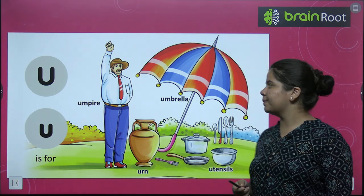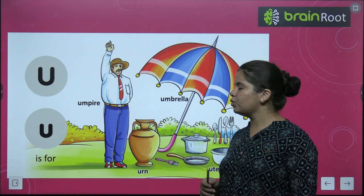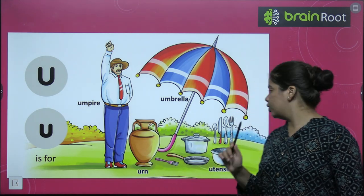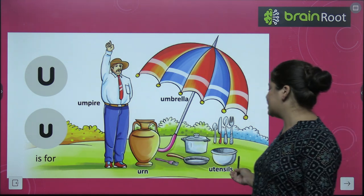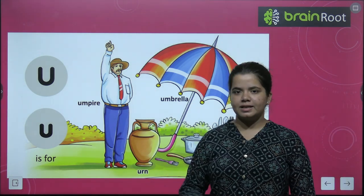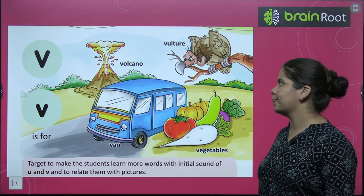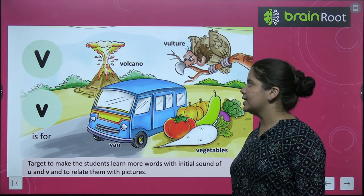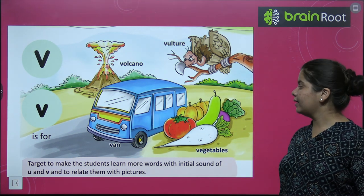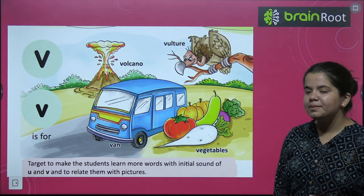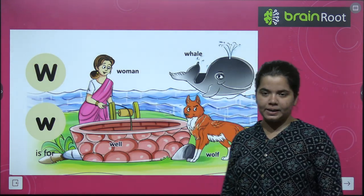Next hamare paas hai U. U for umpire, U for urn, U for umbrella, U for utensils. Utensils kya hote hain? Bartan — jo aapke kitchen mein aap dekhte hain. Next is V. V for volcano, V for van, V for vegetables, V for vulture.